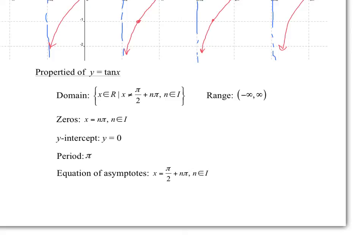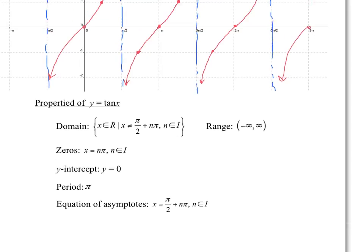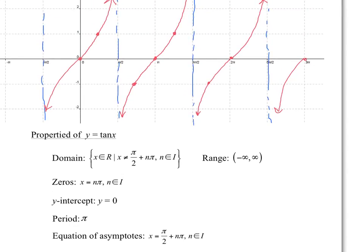So adding pi once, twice, three times — those are the excluded values. The range is negative infinity to infinity, so it goes all the way down and all the way up. The zeros are at every integer multiple of pi: 0, pi, 2 pi, 3 pi. The y-intercept is y equals 0, so we cross there. The period is only pi — it only takes pi to repeat the same function.